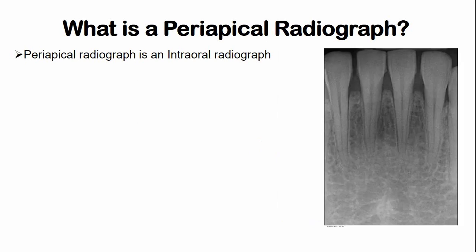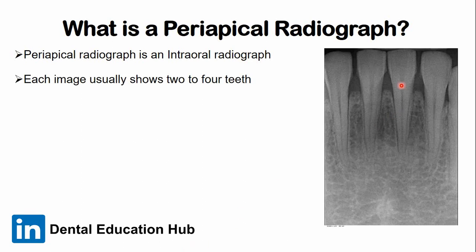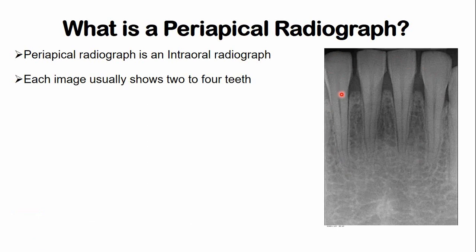Each periapical radiograph usually shows two to four teeth. For example, this is a periapical radiograph showing the mandibular anterior teeth — all four mandibular incisors are visible in this periapical radiograph.